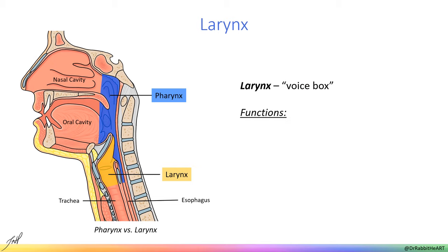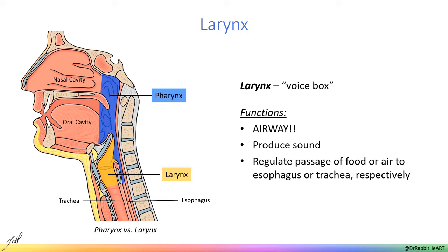We will now turn our attention to the larynx, which is continuous superiorly with the pharynx and inferiorly with the trachea. The larynx is commonly referred to as the voice box, and although it does produce sounds, it is also clinically relevant as the opening to the airway. The larynx is composed of a cartilaginous skeleton covered in muscles and mucosa. It produces sound as air moves out of the lungs and passes between vocal folds. Additionally, the larynx contains a valve called the epiglottis to protect the airway during swallowing.